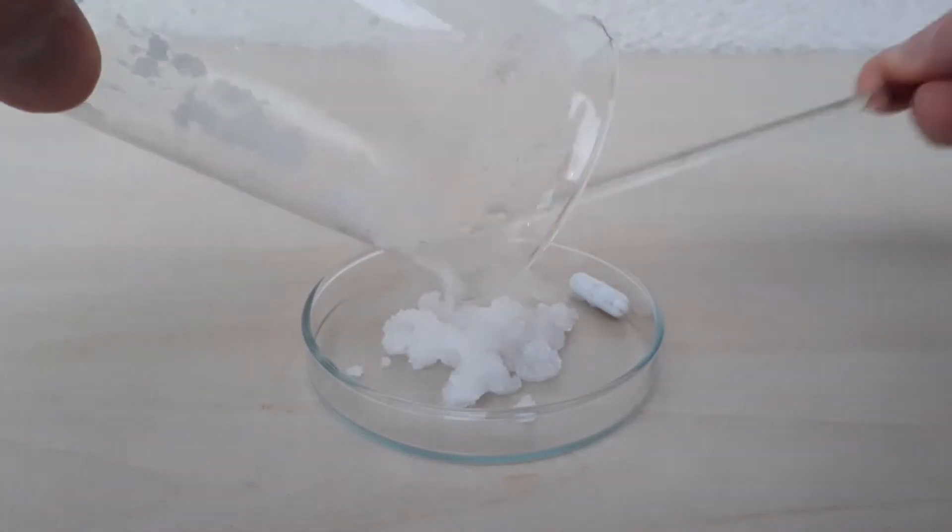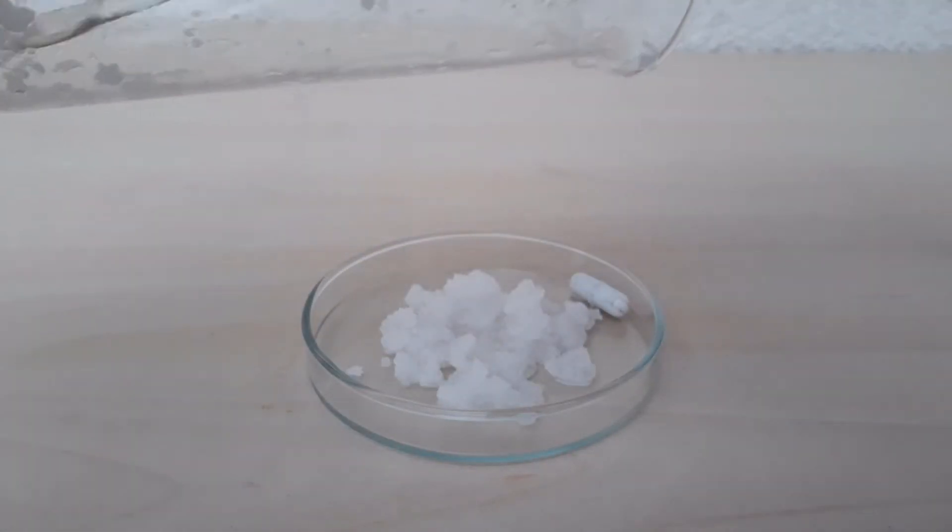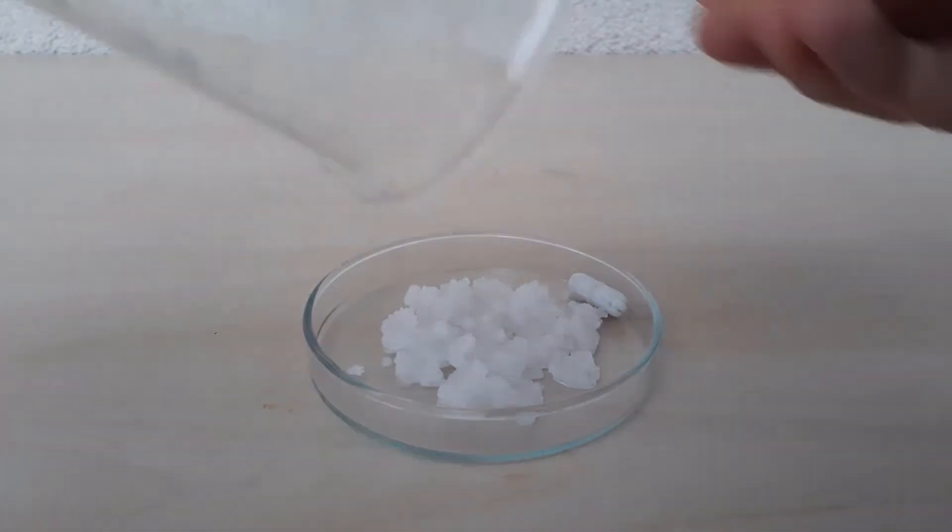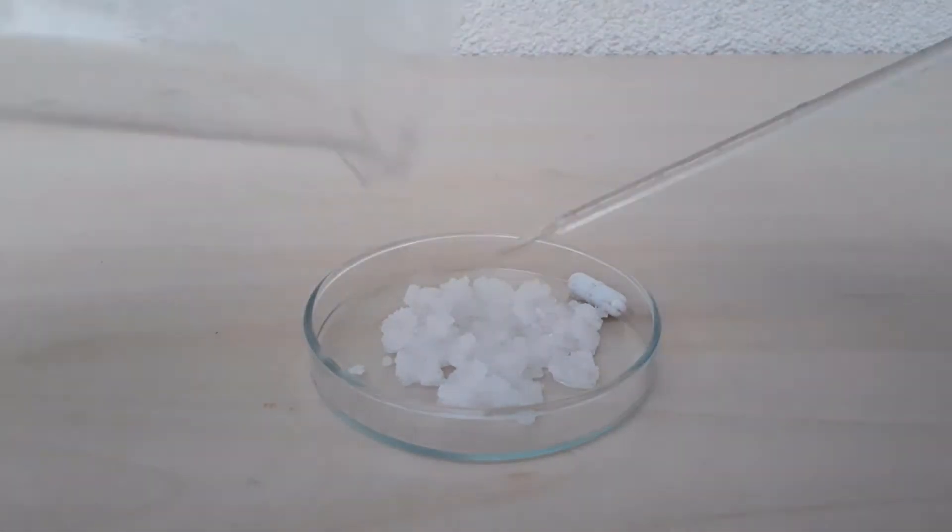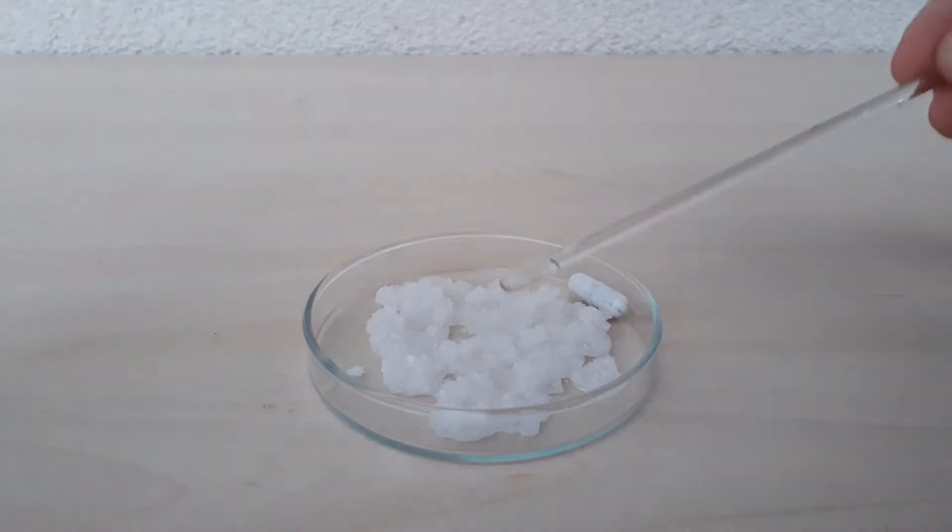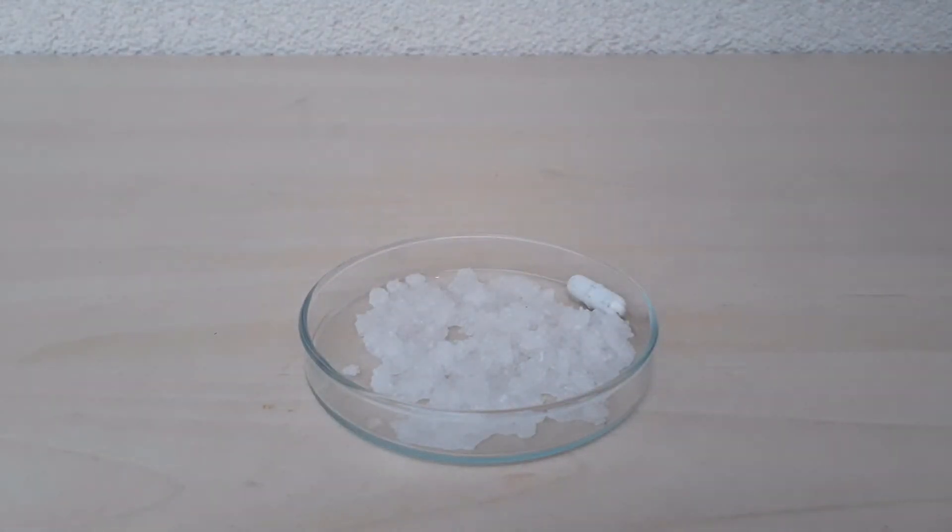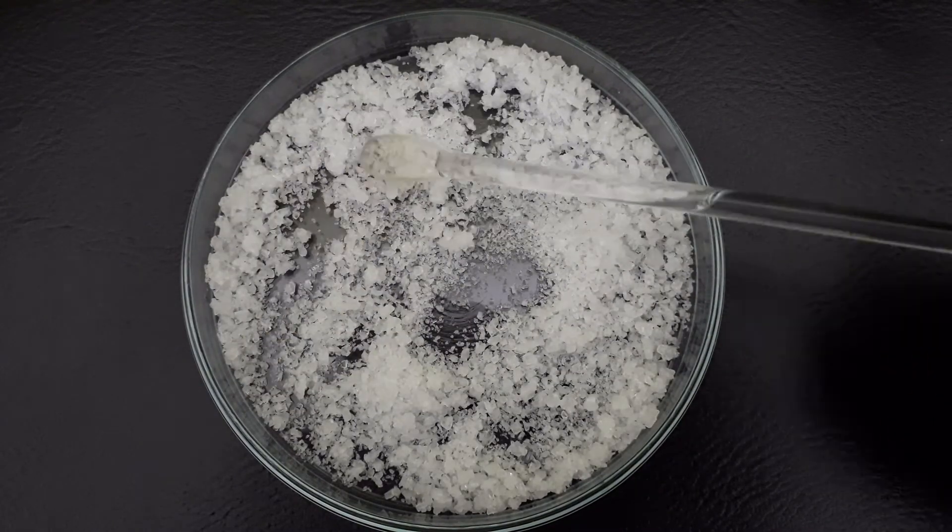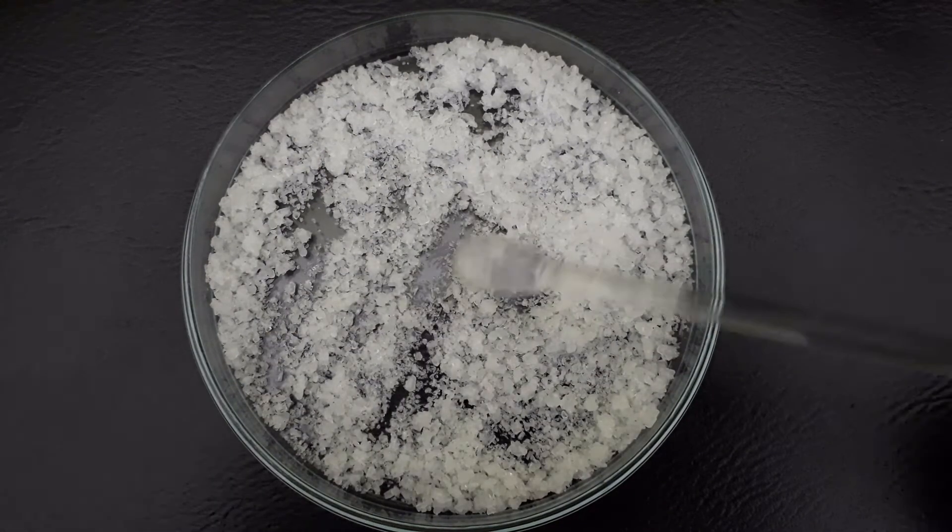I scraped out all of the formed crystals onto this Petri dish and let the rest of the water evaporate. In the end the yield is 20 grams of nice potassium sulfate.